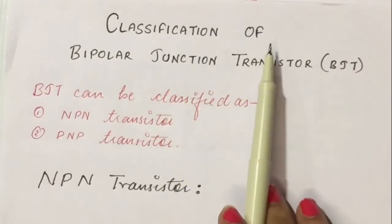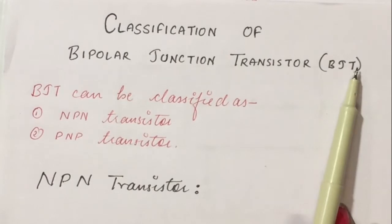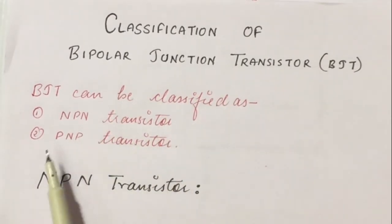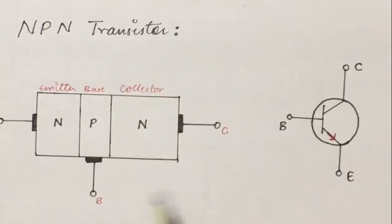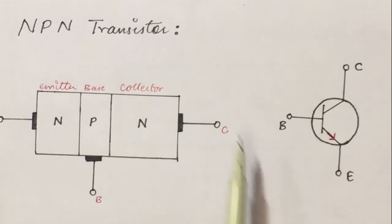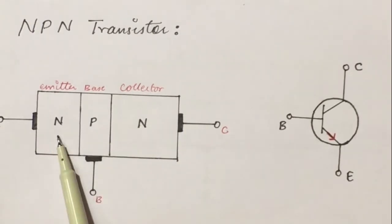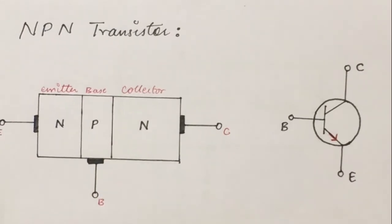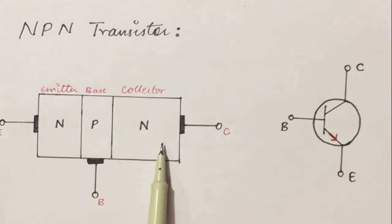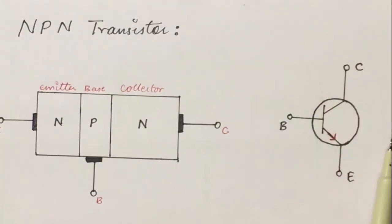Now we will discuss the classification of the bipolar junction transistor. BJT can be classified as: first, NPN transistor, and second, PNP transistor. In an NPN transistor, a P-type semiconductor is sandwiched between two N-type semiconductors. The emitter and collector are N-type semiconductors and the base is a P-type semiconductor. In NPN transistors, electrons are the majority charge carriers and the emitter supplies electrons to the collector region. In the symbol of the NPN transistor, the arrow points from base to emitter.